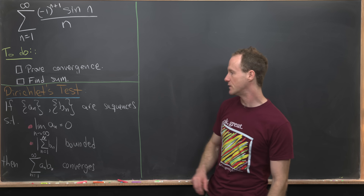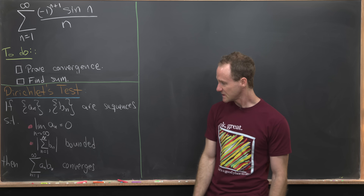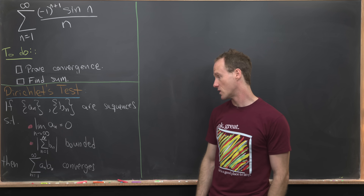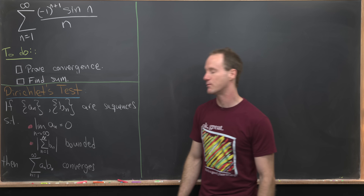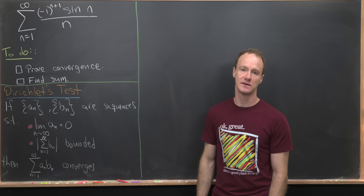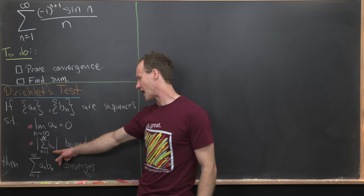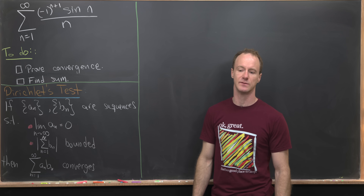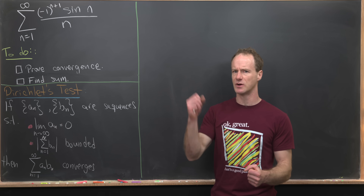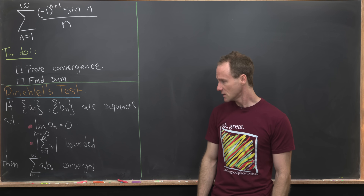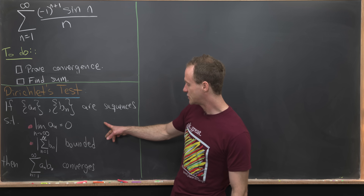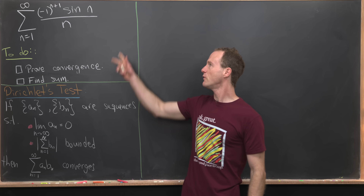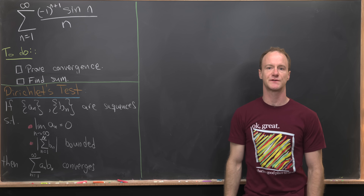Dirichlet's test says that if you have two sequences a_n and b_n satisfying these conditions: the limit as n goes to infinity of a_n equals 0, and the absolute value of the partial sums of b_n is bounded — and notice it's important that we have the absolute value of the partial sums, not just the sum as n goes from 1 to infinity of b_n, which could diverge — then the sum as n goes from 1 to infinity of a_n b_n converges.